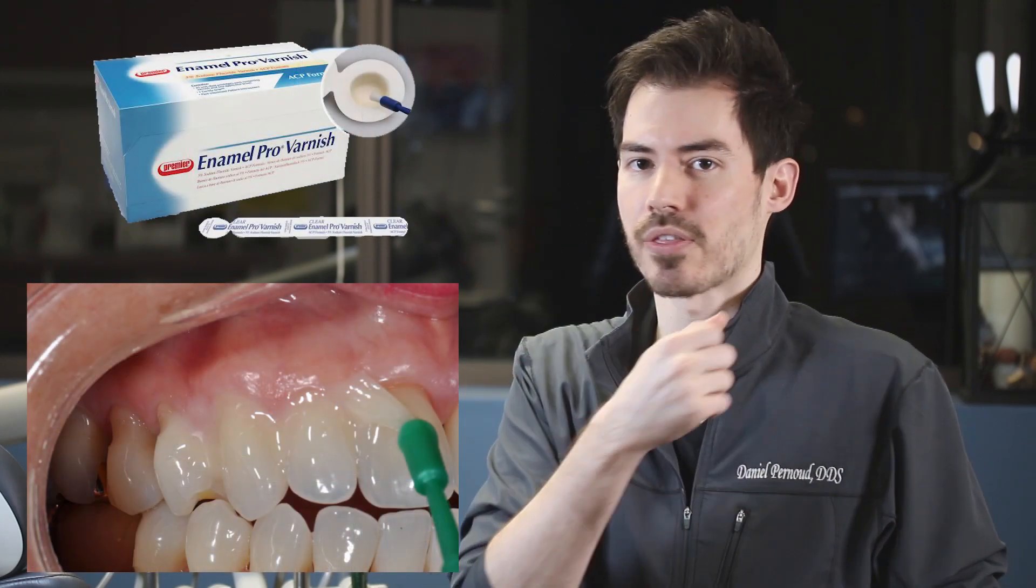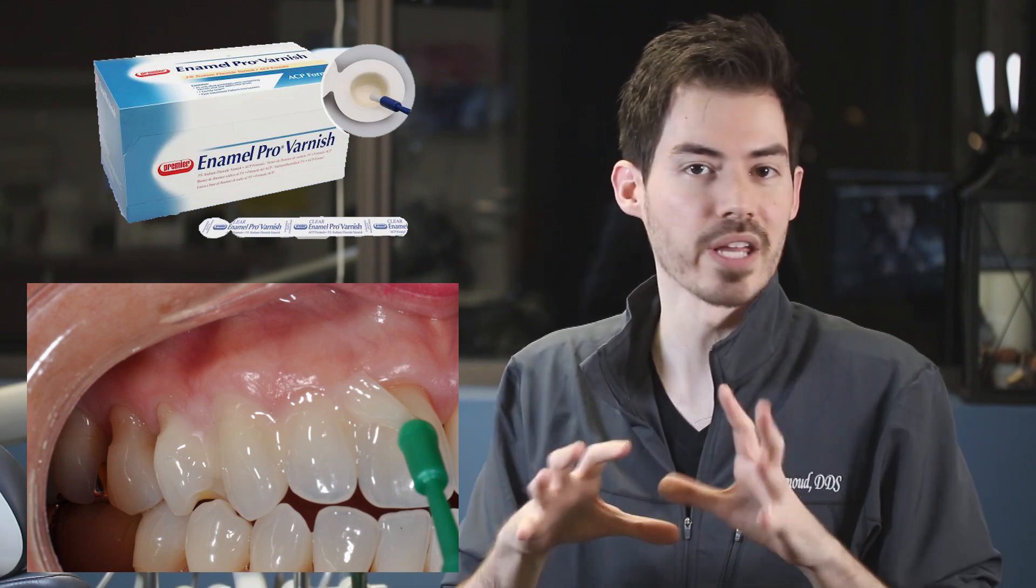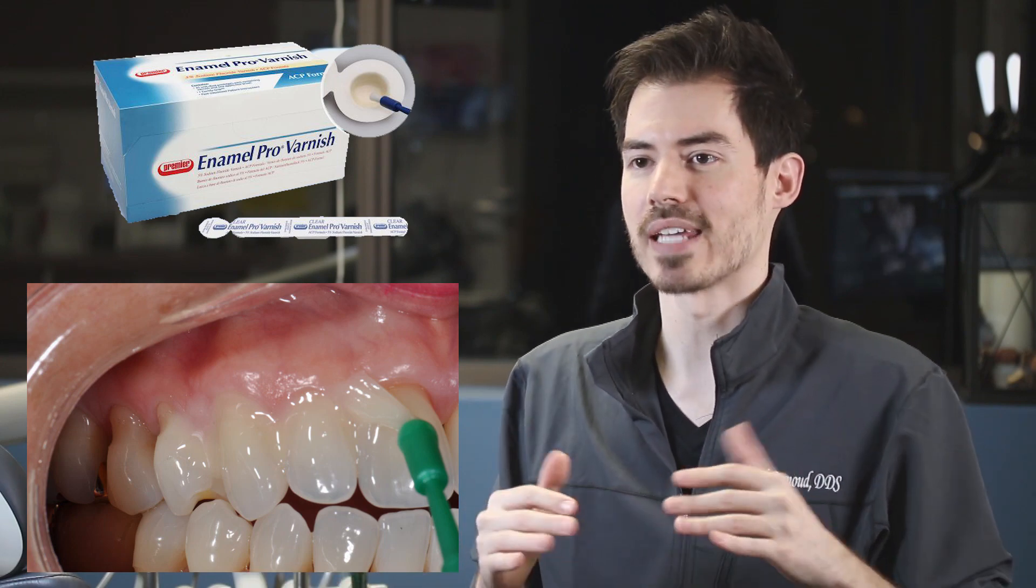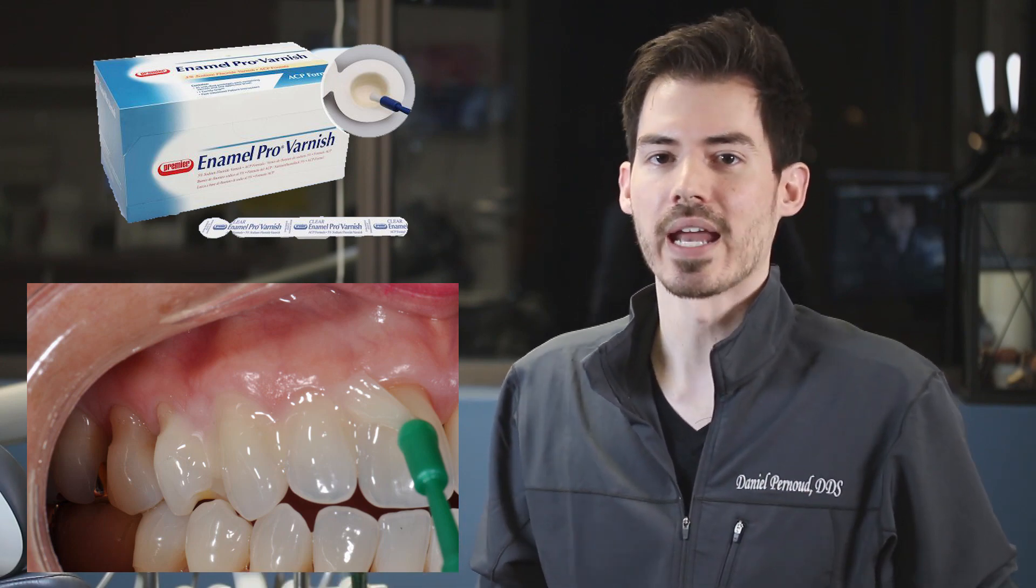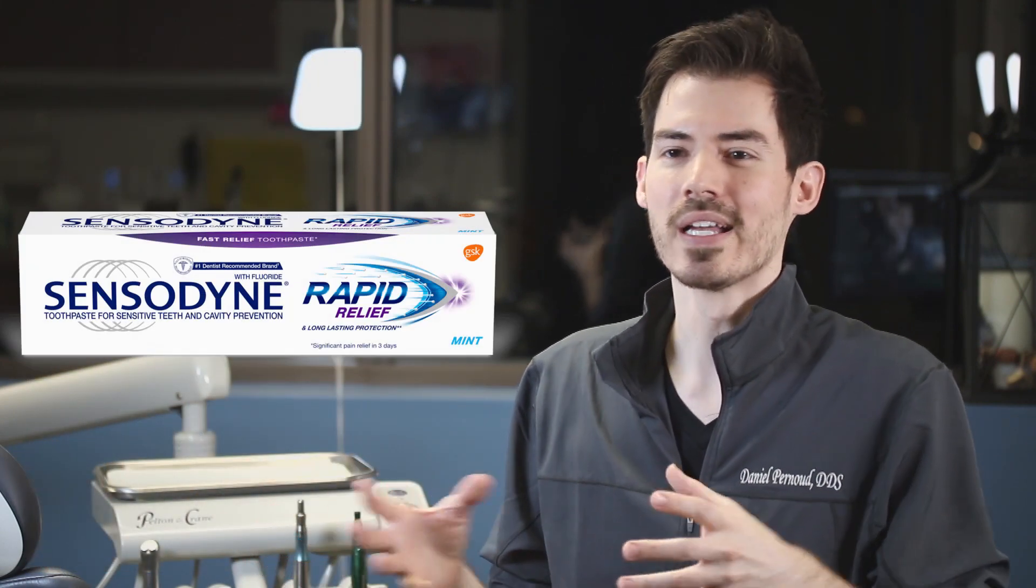If that filling doesn't work, then I would recommend something called a fluoride varnish. That's the material that we brush on your teeth. Usually I do it on all the teeth because it strengthens all your teeth in general, but it can decrease sensitivity. And I like to apply that and I get people on the sensitivity toothpaste for about a month or so. Now if that hasn't done it, then my next step would be to change the material.